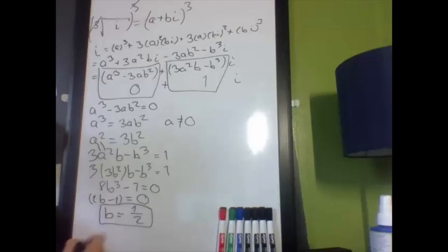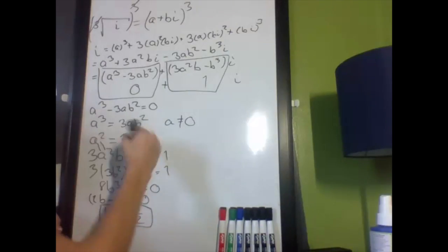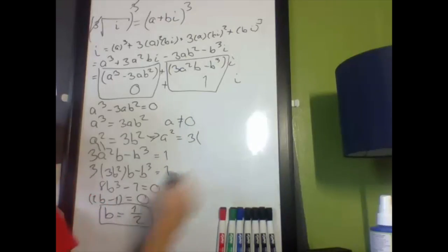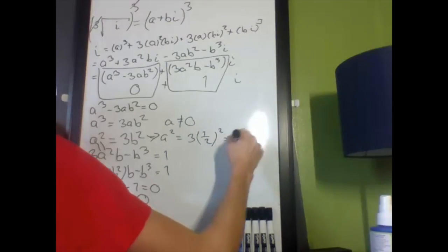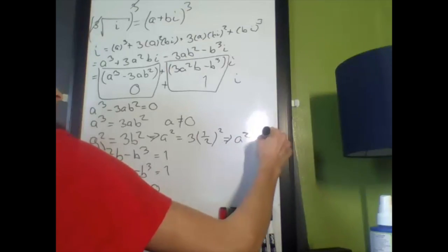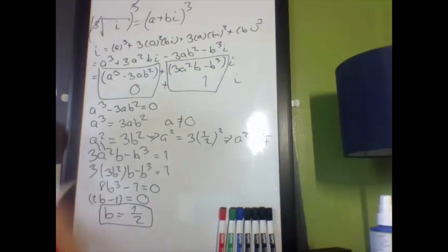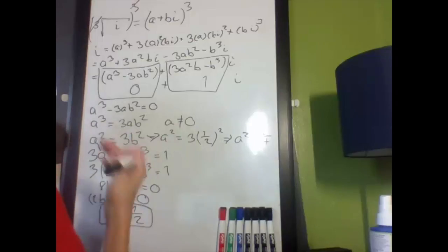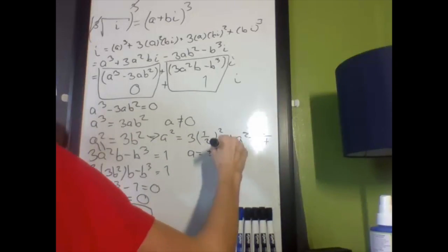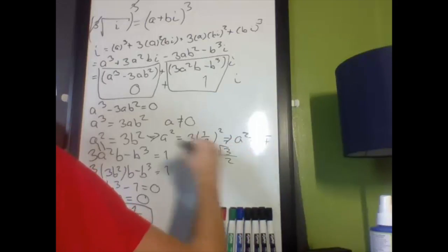Now, what are the values for a then? Well, looking at this equation, I get a squared equals 3, what's b, 1 half, squared, meaning a squared equals 3 quarter. Now, take plus or minus the square root of both sides, and I get a equals plus or minus the square root of 3 over 2.